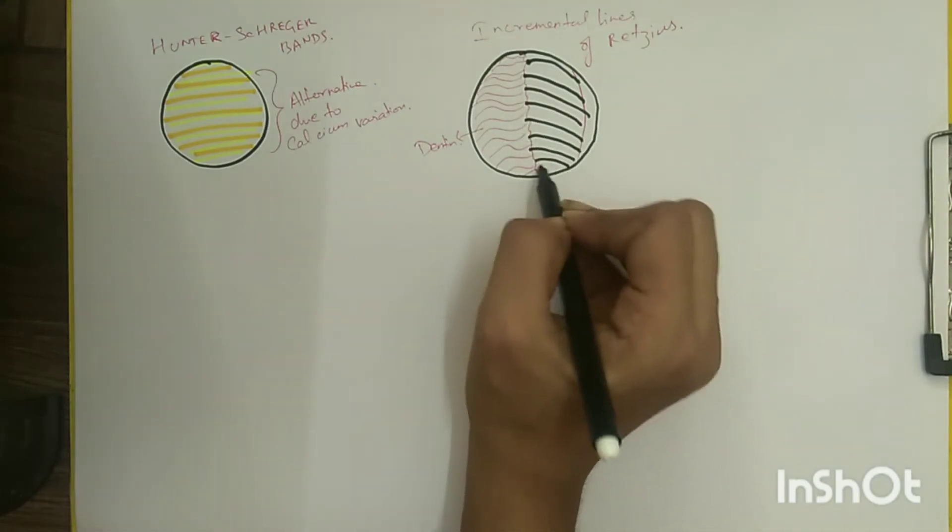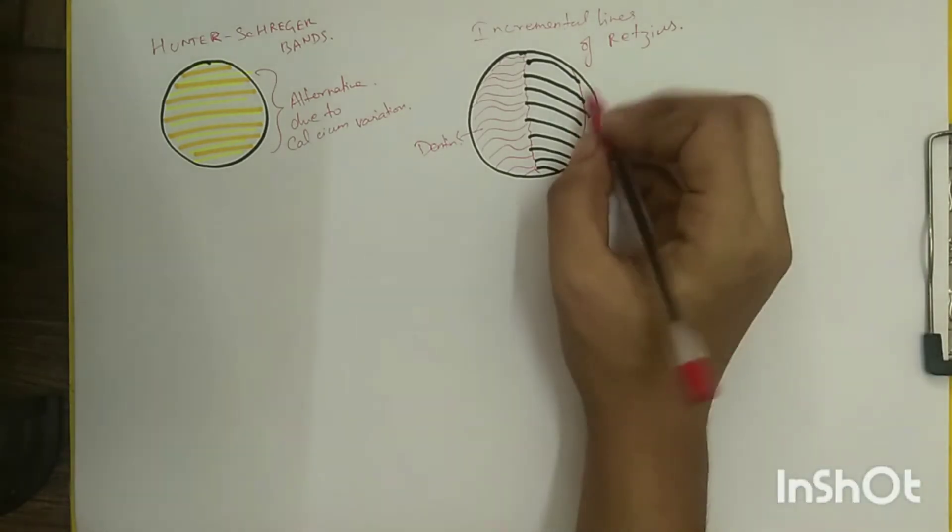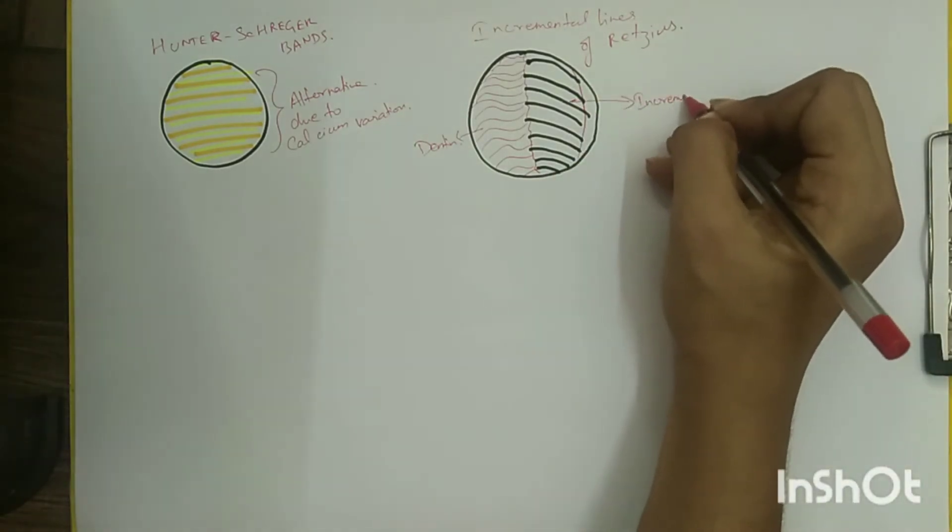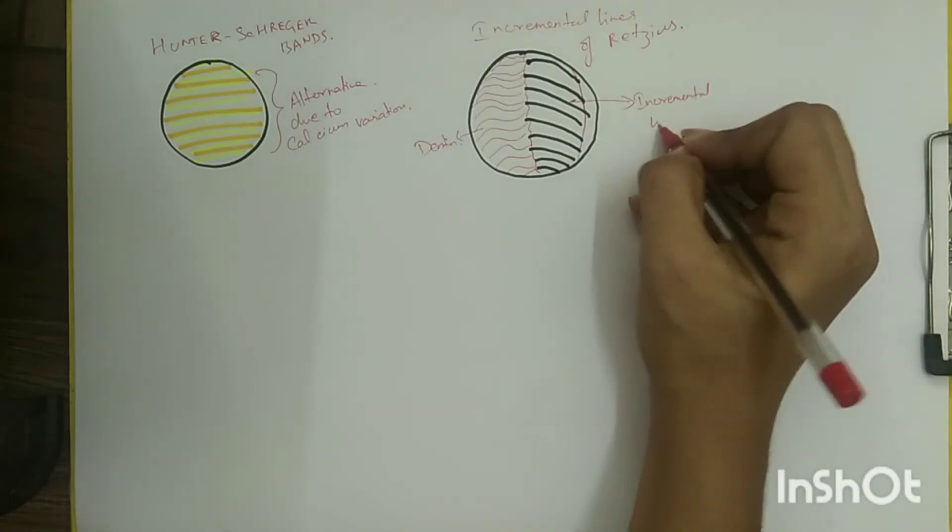In cross section, they appear as concentric circles similar to the growth rings seen on the cut surface of a tree trunk.